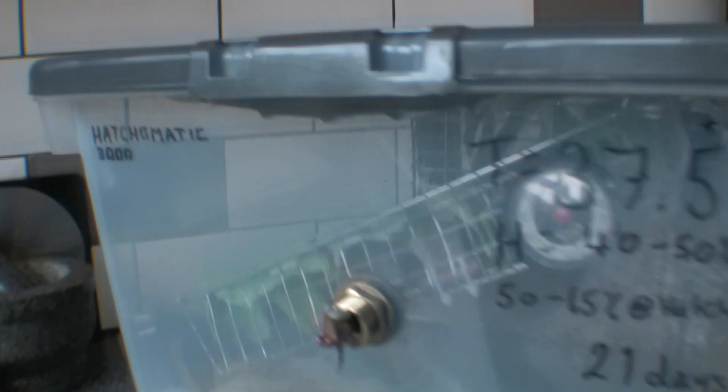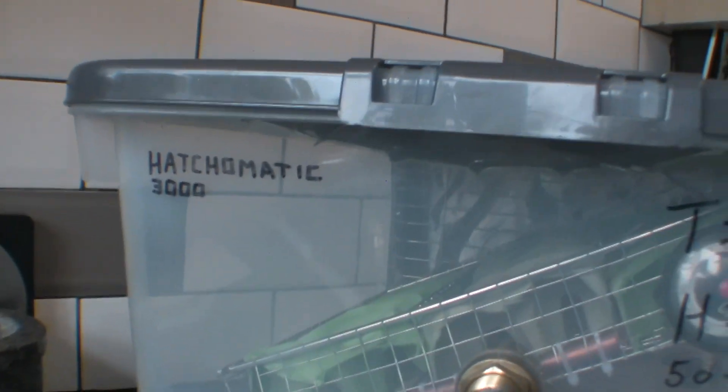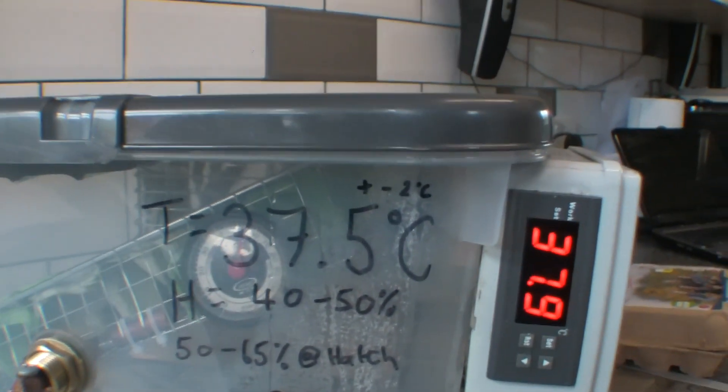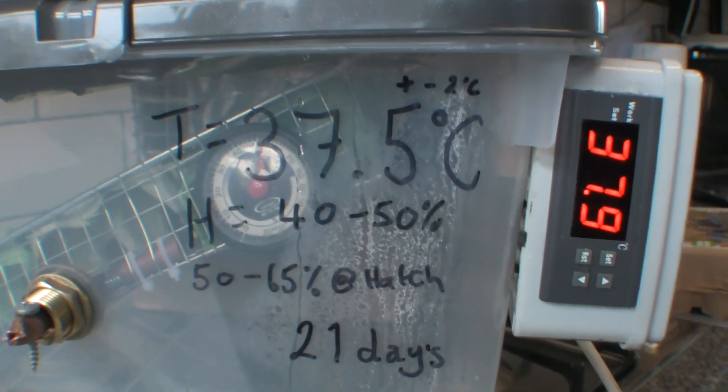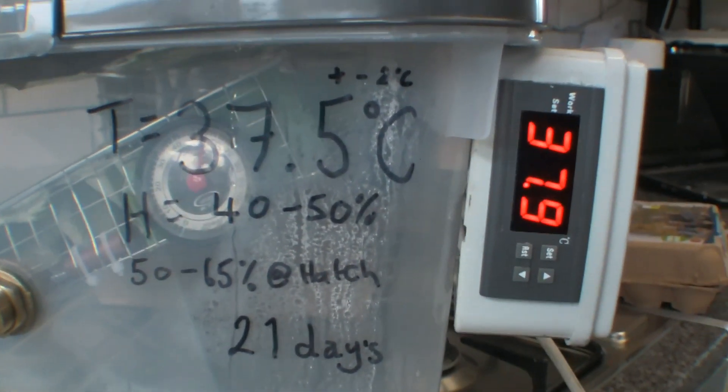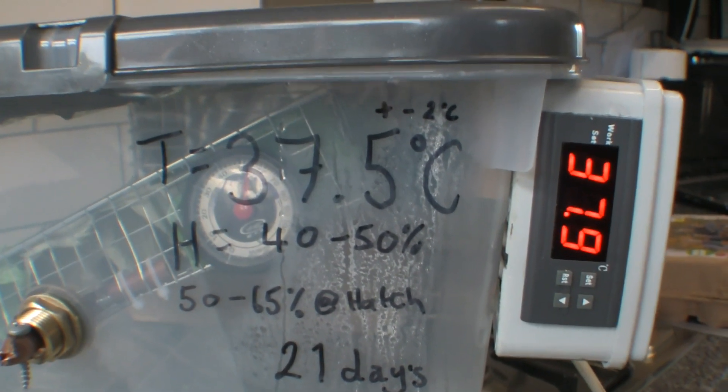Here we have my patented Hatchimatic 3000. I've written all the temperatures and humidity on there for reference, so we can see that when we do come to incubate the eggs we want them at 37.5 degrees for a fan-assisted incubator.